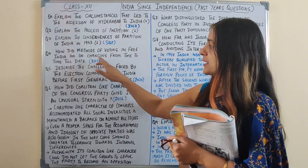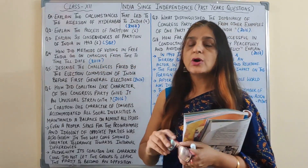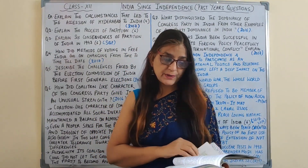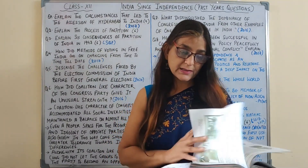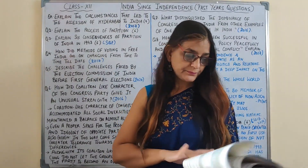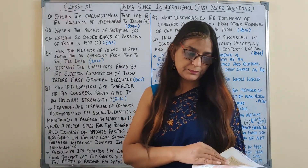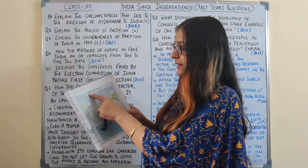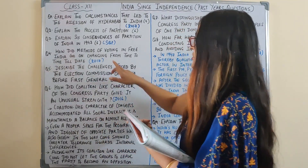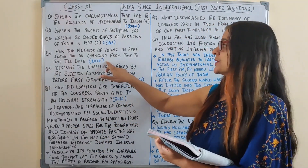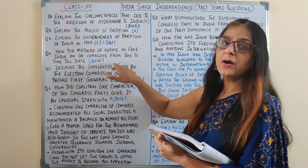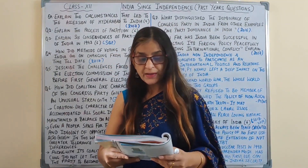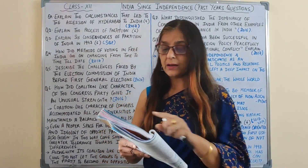Next: How did the methods of voting in free India go on changing from time to time till date? This was part of the earlier syllabus chapter on era of one-party dominance. In the book, the heading 'Changing Methods of Voting' is clearly written. This is a 2017 question. The book gives all the points from when India became independent to the voting method we currently use.